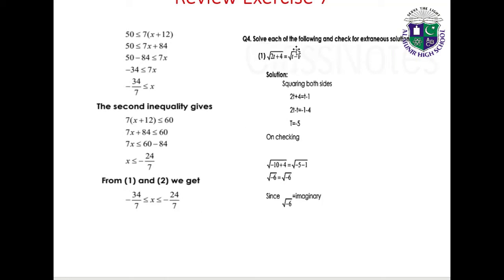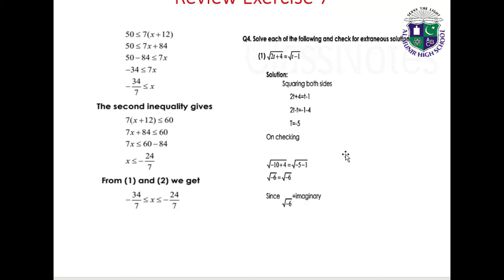Question 4, Part 1: Solve and check for extraneous solutions. √(2t plus 4) equals √(t minus 1). Squaring both sides: 2t plus 4 equals t minus 1, giving 2t minus t equals minus 1 minus 4, so t equals minus 5. On checking, √(2(-5) plus 4) equals √(-6), which is imaginary, so t equals minus 5 is an extraneous solution.